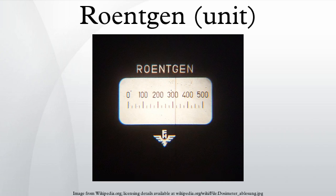They named this derivative quantity the Röntgen equivalent physical to distinguish it from the IRC Röntgen. Towards the middle of the 20th century, Röntgens were used for the purpose of radiation protection, replacing earlier practices that relied on time, film exposure, or fluorescence. The National Council on Radiation Protection established the first formal dose limit in 1931 at 0.1 Röntgen per day. The International X-ray and Radium Protection Committee, now known as the International Commission on Radiological Protection, soon followed with a limit of 0.2 Röntgen per day in 1934.